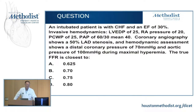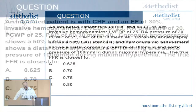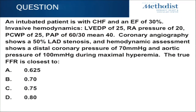Here's a hemodynamic question. A patient with heart failure has the following hemodynamics: end diastolic pressure of 25, right atrial pressure of 20, wedge of 25, elevated PA pressures, and a 50% mid-LAD. A pressure wire test is performed with hyperemia showing a coronary pressure of 70 and an aortic pressure of 100. The true FFR is closest to 0.625, 0.7, 0.75, or 0.8?